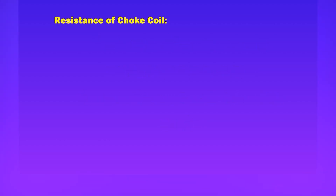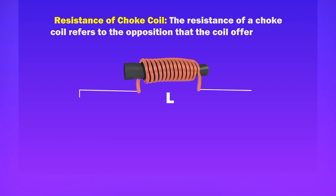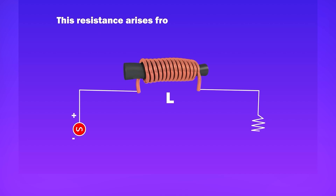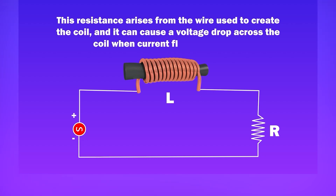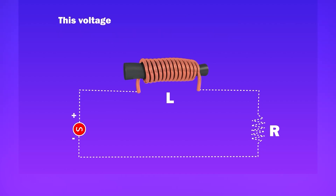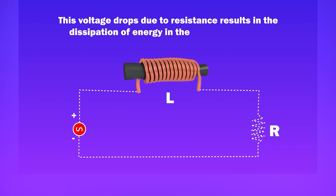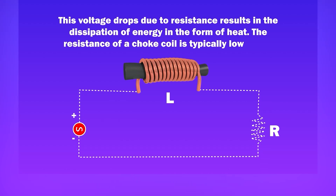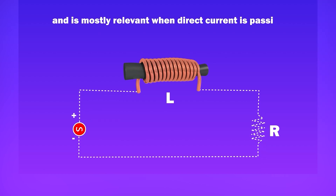Resistance of Choke Coil: The resistance of a choke coil refers to the opposition that the coil offers to the flow of direct current (DC). This resistance arises from the wire used to create the coil and can cause a voltage drop across the coil when current flows through it. This voltage drop due to resistance results in the dissipation of energy in the form of heat. The resistance of a choke coil is typically low and is mostly relevant when direct current is passing through the coil.